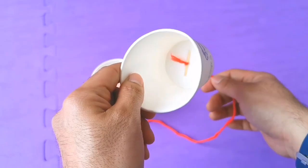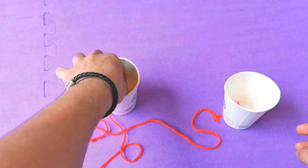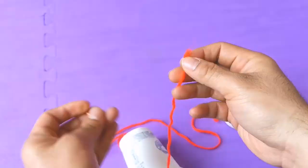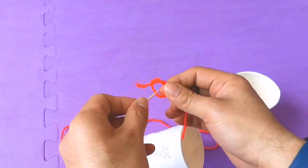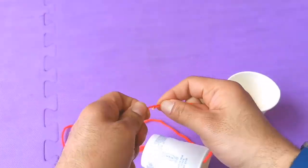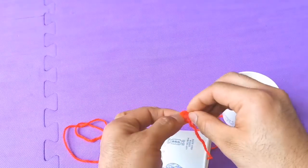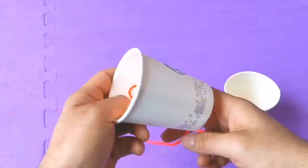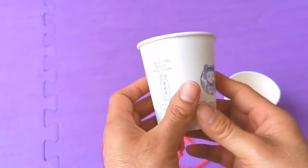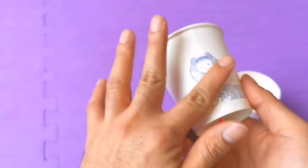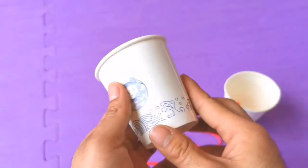And there you go, it's already attached. Now let's move on to the other cup. And my telephone cup is all done. Now you can also draw or color your paper cup to make it more beautiful.